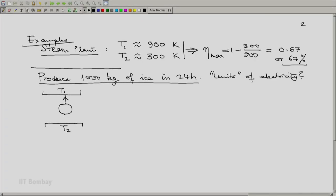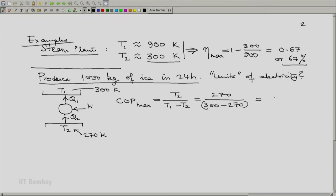The refrigerator will work at roughly 0 degree C at the lower temperature and ambient temperature as the upper limit. So for this, let us consider a refrigerator. Let us say T2 is approximately 270 Kelvin, that is roughly 0 degree C. T1 is our ambient temperature, let it be 300 K. So the maximum COP will be T2 divided by T1 minus T2, which is 270 divided by 300 minus 270, which is 9.